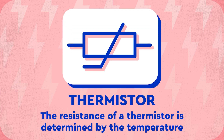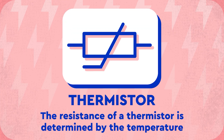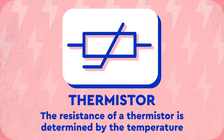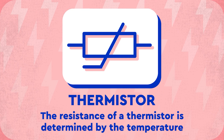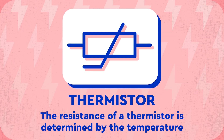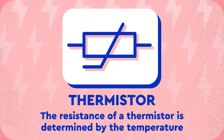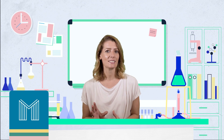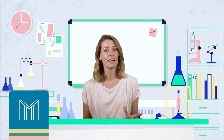Thermistors are a special type of resistor. The resistance of a thermistor is determined by the temperature. At high temperatures the resistance is low, and as the temperature decreases the resistance of the thermistor increases. Thermistors are used in thermostats to automatically turn central heating and air conditioning on or off.